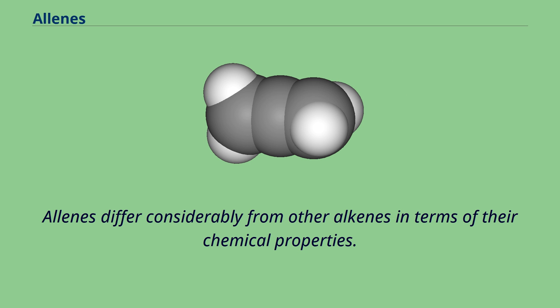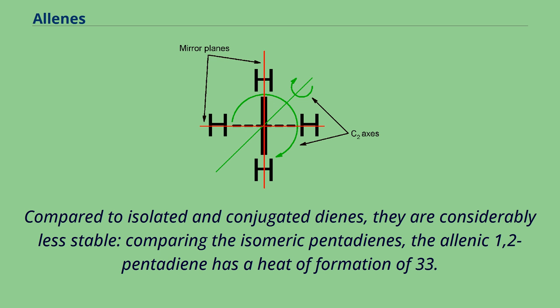Allenes differ considerably from other alkenes in terms of their chemical properties. Compared to isolated and conjugated dienes, they are considerably less stable.